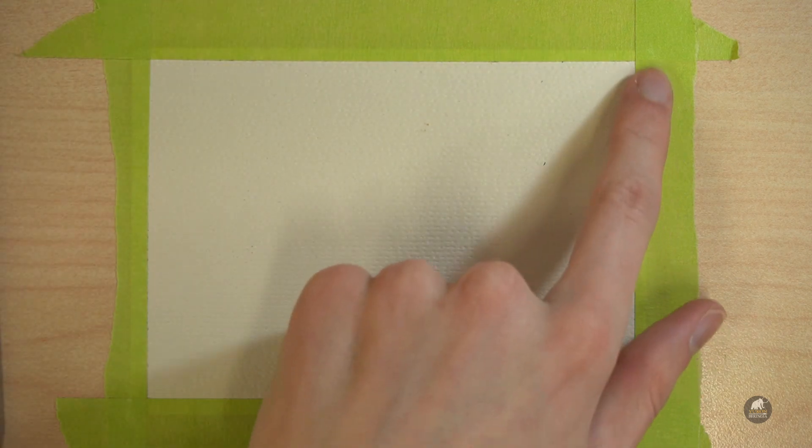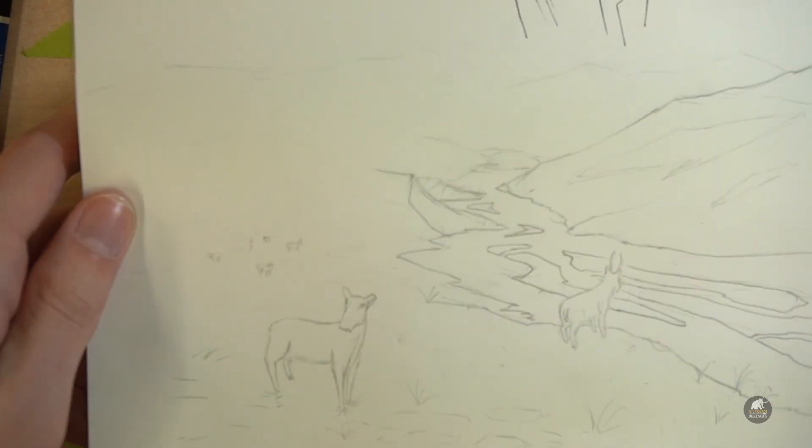We're going to be adding a little bit of a landscape to this painting. Just make sure you tape the edges of your paper down. That way your paper won't move and it won't warp as you're putting all that water on it.